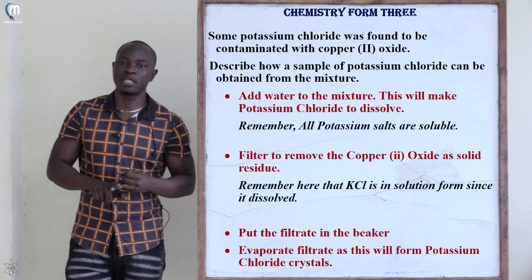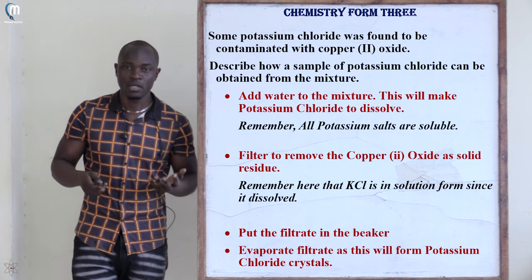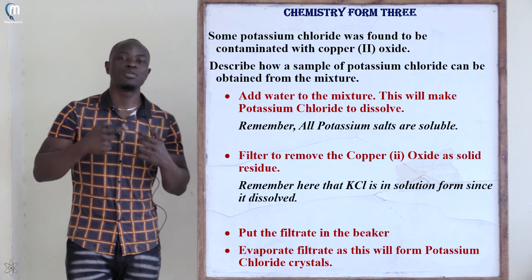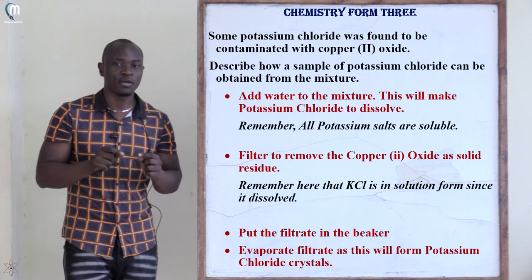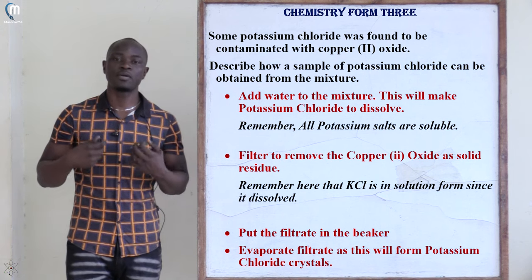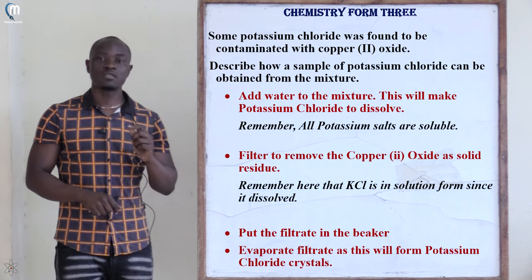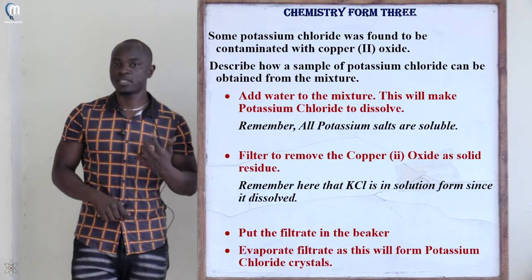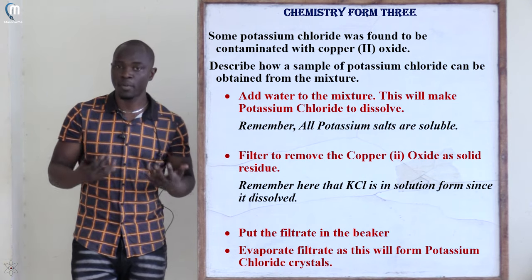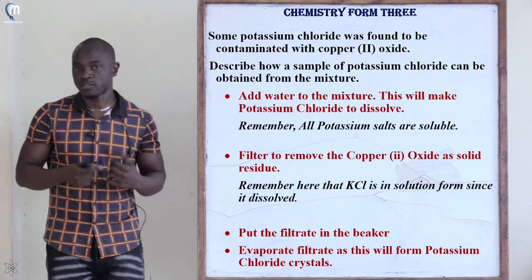All potassium, sodium, and ammonium salts are soluble, so potassium chloride is soluble in water. The first step is to add water to the mixture to dissolve the potassium chloride. Copper(II) oxide is insoluble in water and will remain as a solid residue.